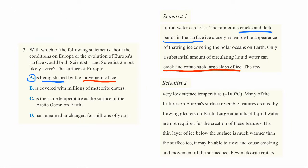Next, Scientist 2 expresses a similar sentiment. Many of the features, this would be a shape, on Europa's surface resemble features created by flowing glaciers on Earth. And a glacier is flowing ice.